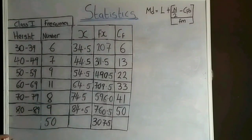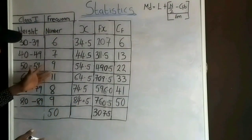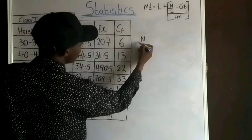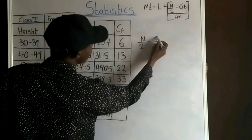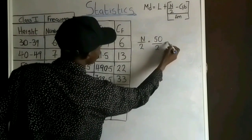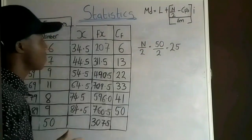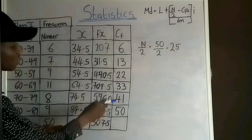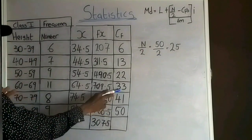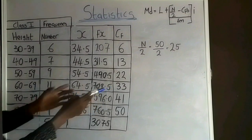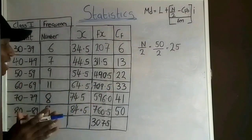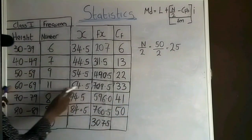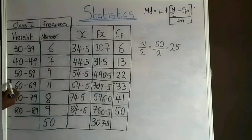The next step is to divide the total number of plants by 2: N/2 = 50/2 = 25. I go back to the cumulative frequency to identify where 25 falls. Since 25 falls within the range up to 33, the class interval of the median class is 60–69.